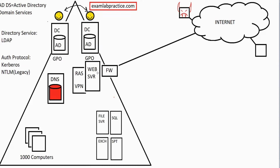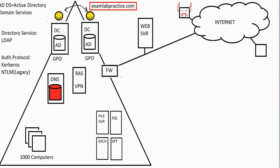You wouldn't want to host the web server internally. You could use something called a reverse proxy, but you'd probably want to put it outside. However, if you put it outside the firewall, that poor web server is completely exposed to the internet with no protection. The way around that is to use two firewalls. The first is the internally connected firewall, and the second is the externally connected firewall. The little network between them is called a DMZ — the demilitarized zone — or, the more popular term now, a perimeter network. DMZ and perimeter network are basically the same thing.